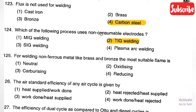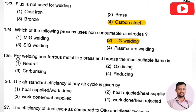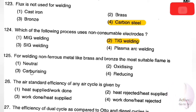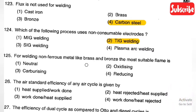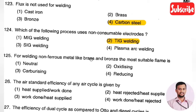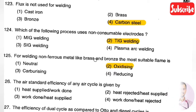The next question: for welding non-ferrous metals like brass and bronze, the most suitable flame is — Option 1: neutral, Option 2: oxidizing, Option 3: carburizing, Option 4: reducing. The right answer is Option 2, oxidizing flame. The oxidizing flame is more suitable to weld materials like brass and bronze.